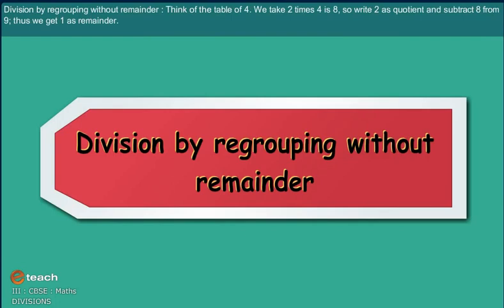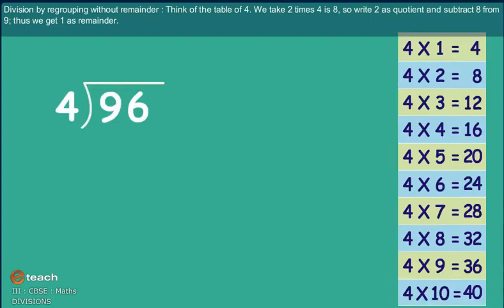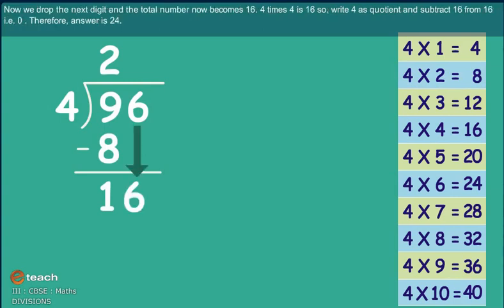Division by regrouping without remainder. Think the table of 4. We take 2 times 4. So write 2 as quotient and subtract 8 from 9. We get 1 as remainder. And now we drop the next digit and the total number now becomes 16. Think table of 4. 4 times 4 is 16. So write 4 as quotient and subtract 16 from 16. And the answer is 24.